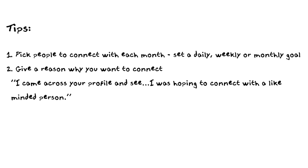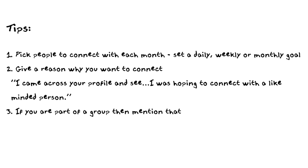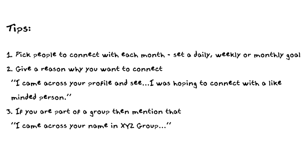For example, you might say: 'I came across your profile and I see [relevant detail] — I was hoping to connect with a like-minded person.' If you're part of a group that they're also part of, make sure you mention that, because you'll have much better uptake on your connection request being accepted. For instance: 'I came across your name in [shared group],' and then send the request with the reason why you want to connect.